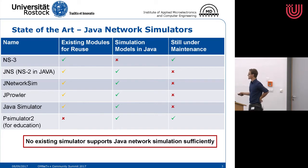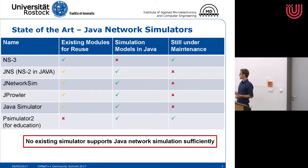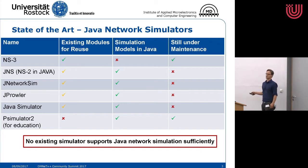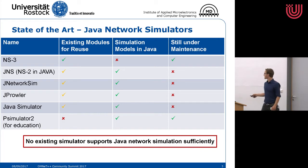The second one, which I think is very interesting, is the JNS framework, which is basically a port of NS2 towards Java. It has a yellow tick for reuse of existing modules, because this is NS2 and quite old now, and as stated by the authors, it was never as complete as NS2 — it is only a subset of the NS2 functionalities which were ported. So it is possible to write Java simulation models, but unfortunately it is not under maintenance anymore.